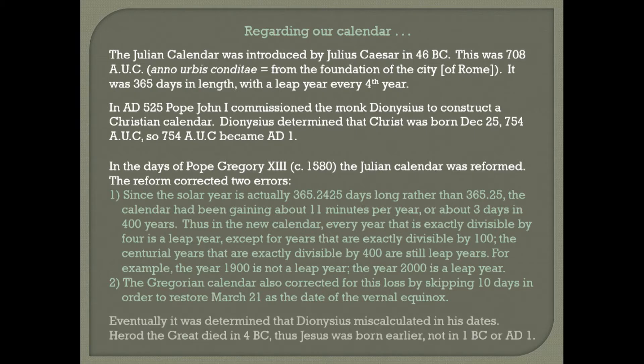It was eventually determined that Dionysius had miscalculated in his dates. Herod the Great died in 4 BC, and thus Jesus was also born earlier — not in 1 BC or AD 1. By the way, there is no year zero; we skip from 1 BC directly to AD 1 with no intervening zero, which can be confusing when counting across that stretch.